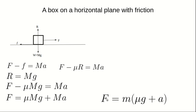So F = M(μg + a), where M is capital letter M. Sometimes a problem will give the mass, the coefficient of kinetic friction, and the acceleration — providing three of these parameters and asking you to find the unknown. Once you know how to generate this formula, you can calculate for the unknown.